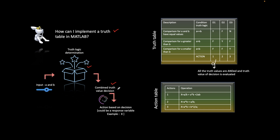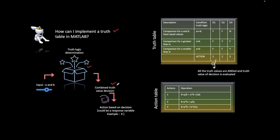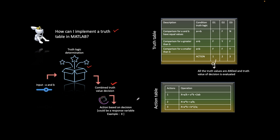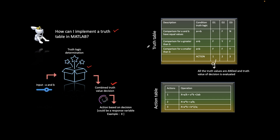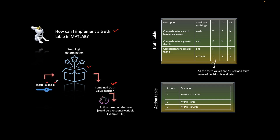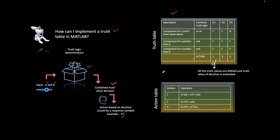Based on the inputs, you will get some truth values, actions, or decisions that need to be performed. Every decision has an action pair which decides what to do next. The combination determines which decision needs to be taken, and based on that decision there will be a corresponding pair of actions. In this case, a and b are the inputs and x is the output.